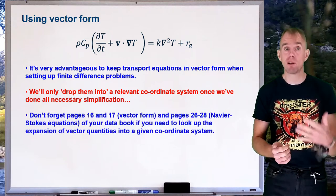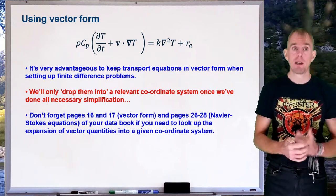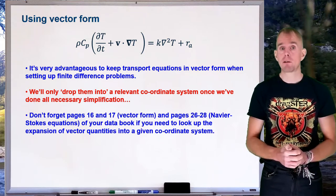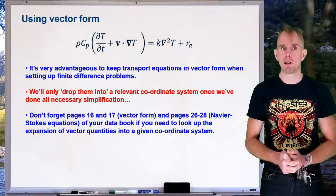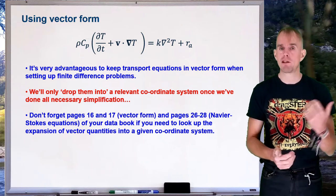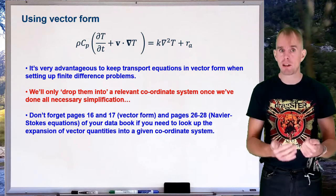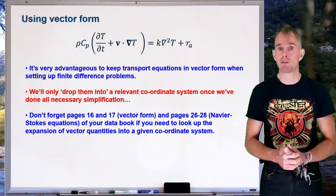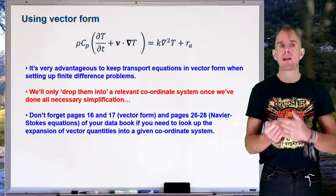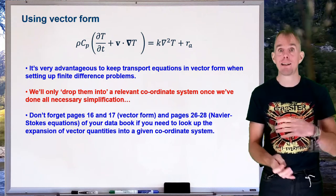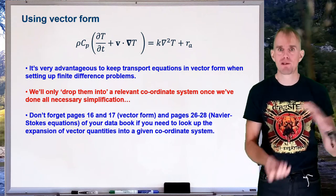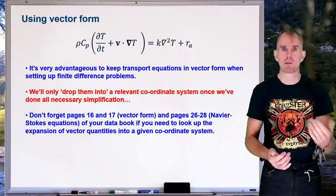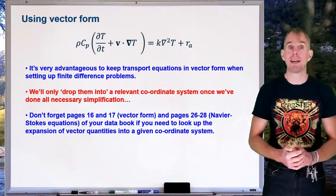Don't forget your departmental data book — it has the vector form of transport equations on pages 16 and 17, or pages 26 to 28 for fluid flow and Navier-Stokes. That helps you make sure you don't write out terms in, say, spherical polar coordinates incorrectly.